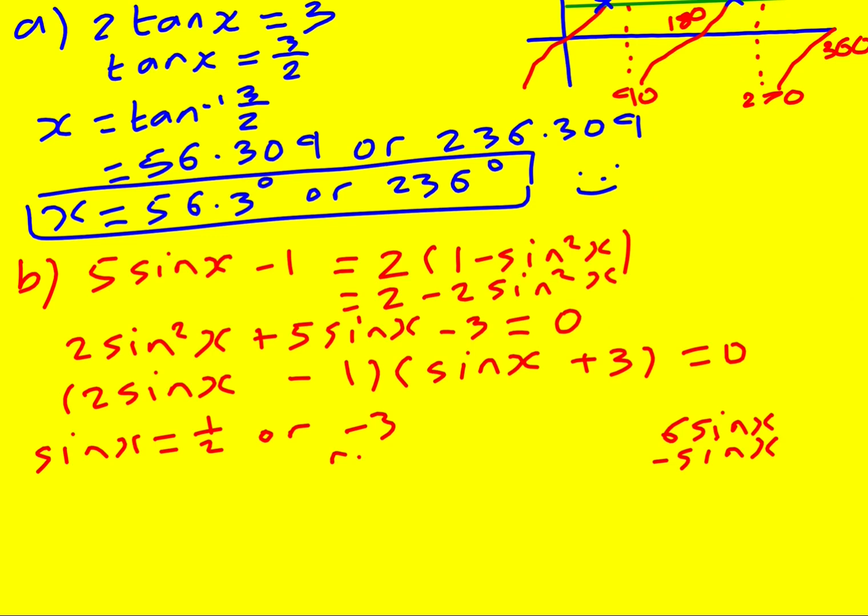All right, this one here is problematic. We need to reject it because sine cannot be as low as minus 3. Now seems a good time to draw a graph of sine. Between 0 and 360, it's going to look like this. And here's the thing: the highest value is 1 and the lowest value is minus 1. So we're just trying to solve sine x equals a half.